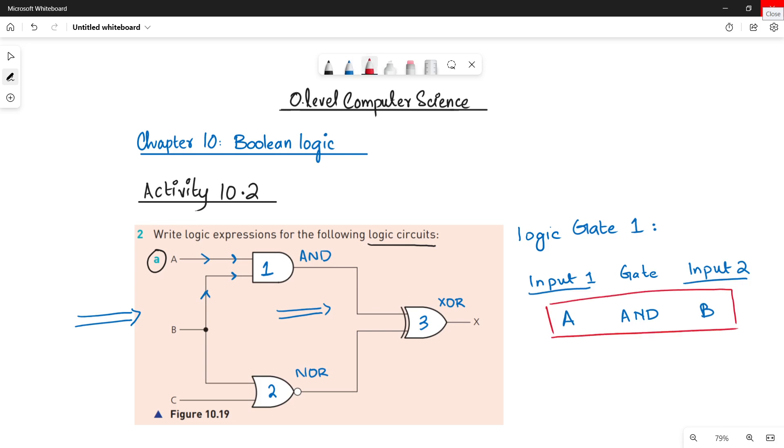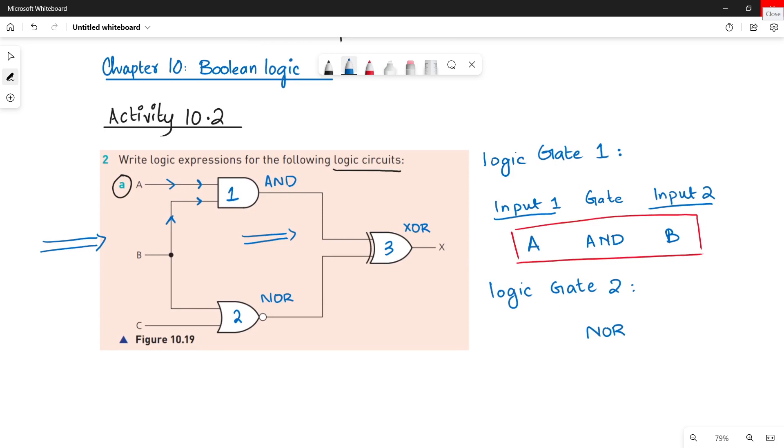Now we will write another logic expression for the second gate, logic gate 2. If you see logic gate 2, it is a NOR gate. So write down NOR in the center and write two of its inputs on either side.